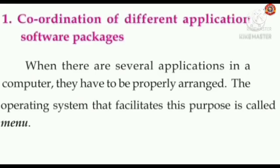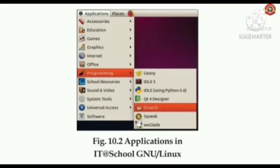Now let's see the needs to be satisfied by an operating system. The first one is coordination of different application software packages. When there are several applications in a computer, they have to be properly arranged. The operating system facilitates this through the menu — here you can see the main menu of our computer: applications in IT School's GNU Linux. So the first need is coordination of different application software packages.